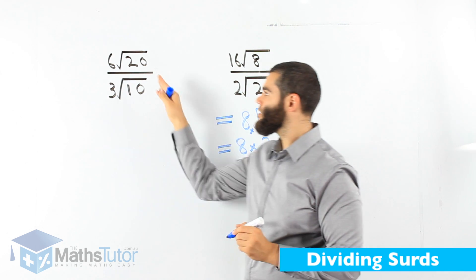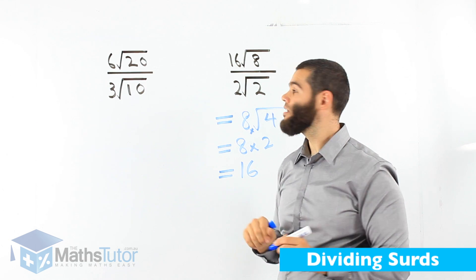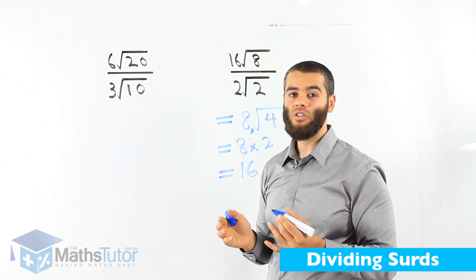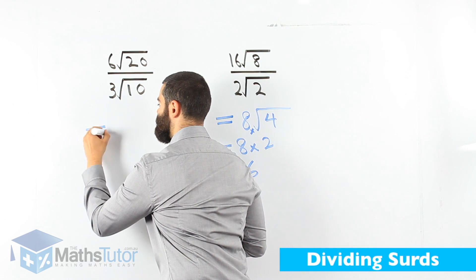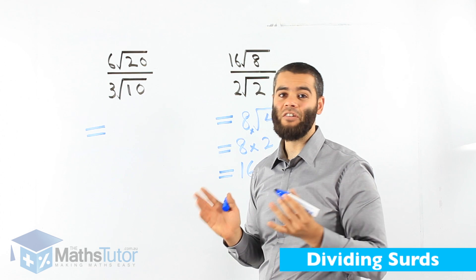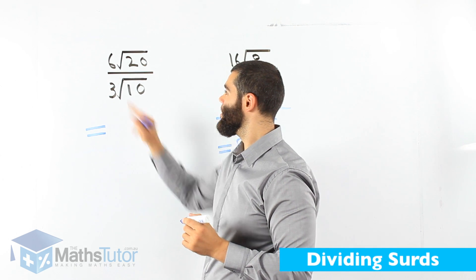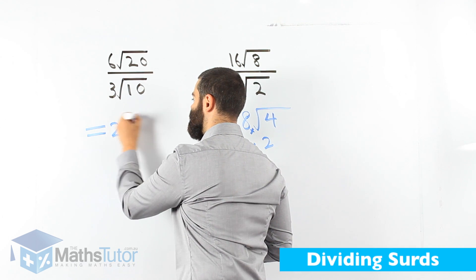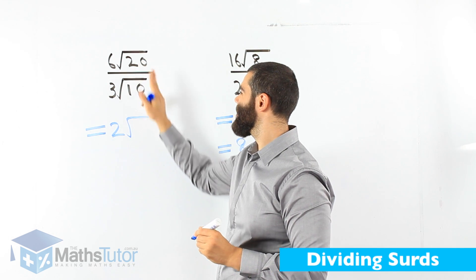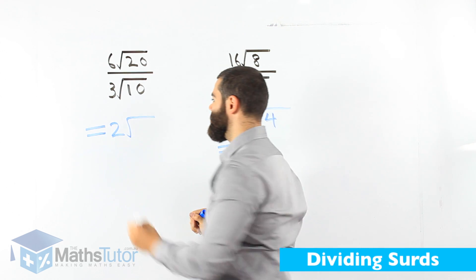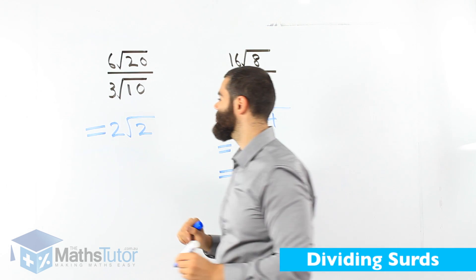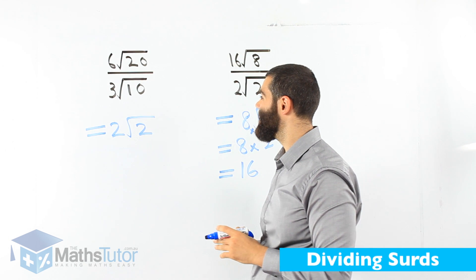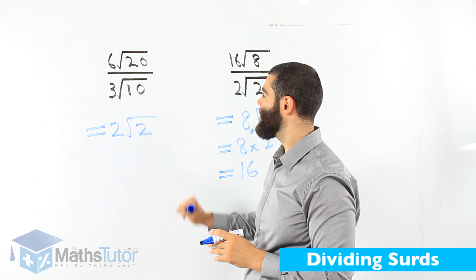Next one. 6 root 20 divided by 3 root 10. Again, it's division, but it's written in fractions. Remember all the time, the fraction bar is actually a division. So the whole numbers divide, 6 divided by 3. And now the surds, 20, root 20 divided by root 10 is root 2. Can we simplify any further? 2 root 2. No, we can't. This is our simplest answer, this is our full answer.